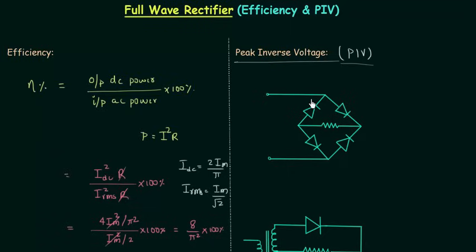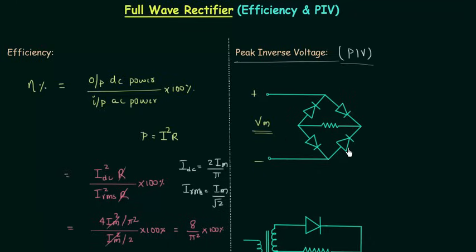I will calculate PIV for the full wave bridge rectifier circuit. The peak inverse voltage will be the same for all four diodes, so you can calculate PIV for any of them. We have to reverse bias the selected diode, so plus-minus will be the polarity. Vm is the maximum or peak input voltage, and PIV is the maximum reverse bias voltage before the diode enters the breakdown region.